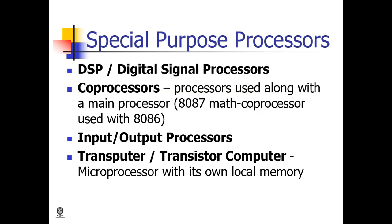As for special purpose processors, there are some processors designed to handle specific functions, such as DSP (digital signal processors), coprocessors (processors used alongside a main processor), input/output processors, and transputers (transistor computers).